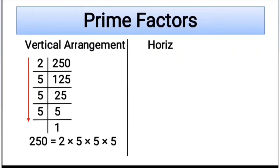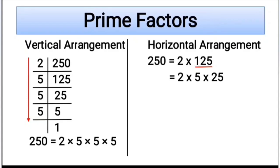Now let's see horizontal arrangement. Here consider same number 250. We can represent 250 as 2 multiplied by 125. Here 2 is prime number and 125 is composite number. So represent 125 as 2 multiplied by 5 multiplied by 25. Here 2 and 5 are prime numbers and 25 is composite number. Write down 25 as 5 multiplied by 5. So we get 2 multiplied by 5 multiplied by 5 multiplied by 5. Now all numbers are prime numbers. So these are prime factors of given number 250. This is horizontal arrangement to obtain prime factors.